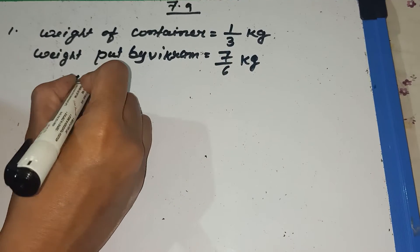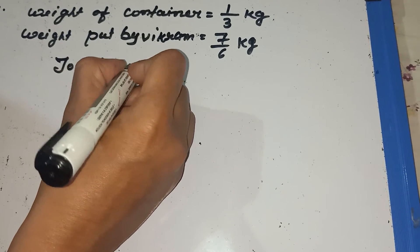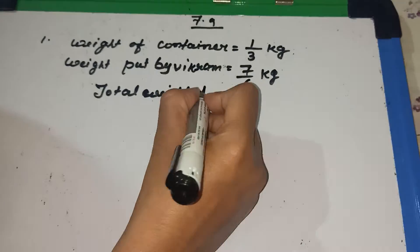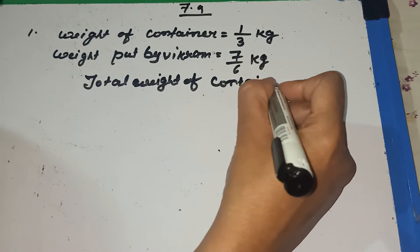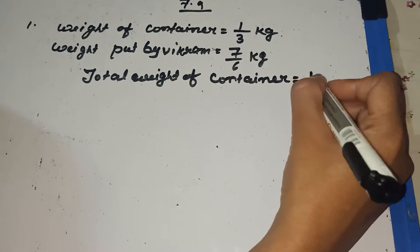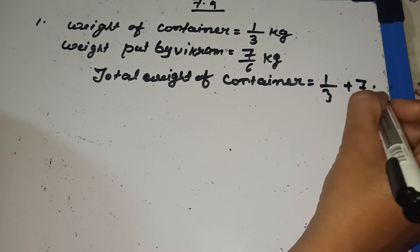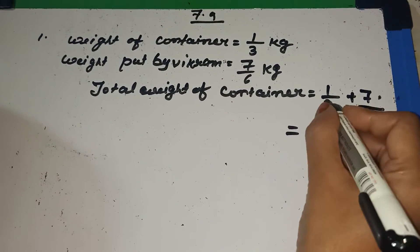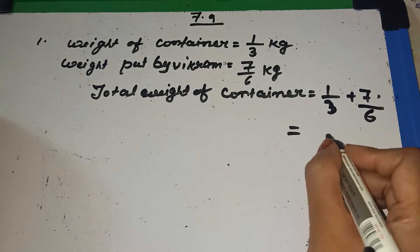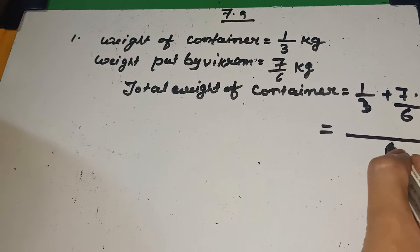Total weight is equal to 1 by 3 plus 7 by 6. I think after that, you will be able to do. So first we find out LCM and LCM is 6. 3, 2 is a 6.